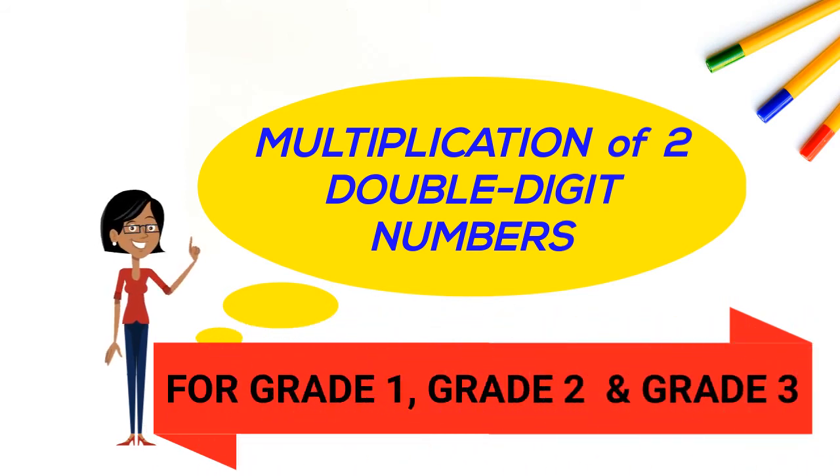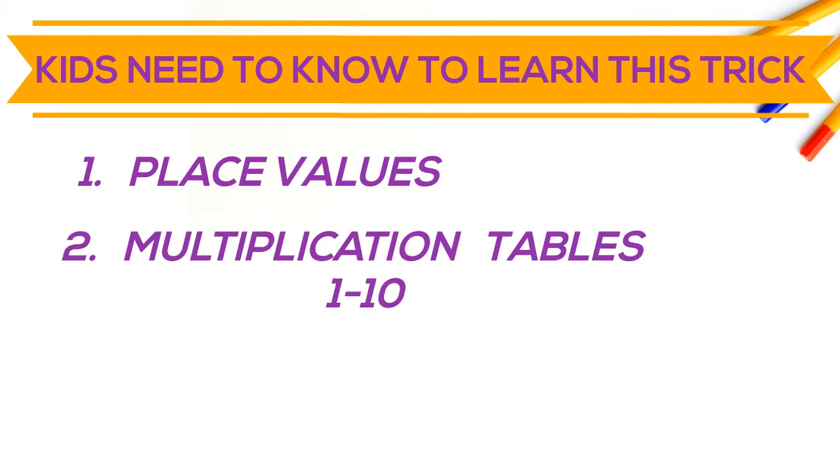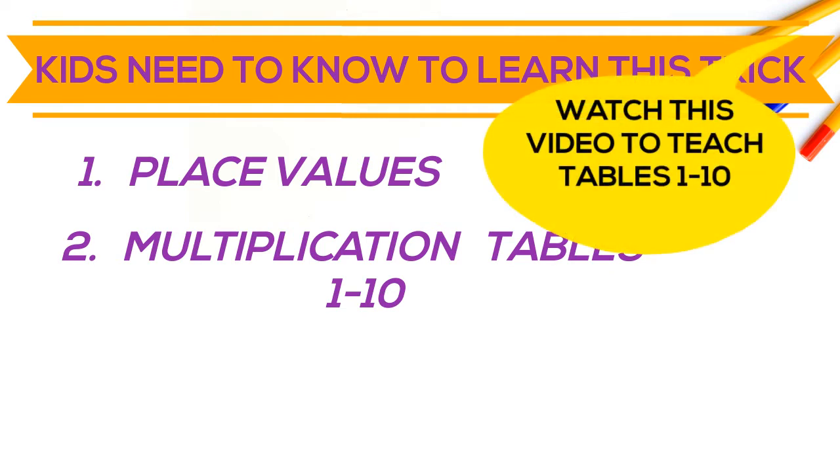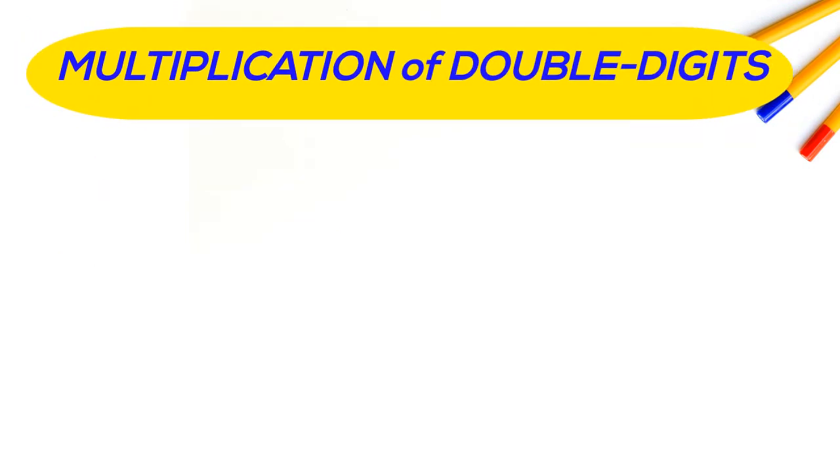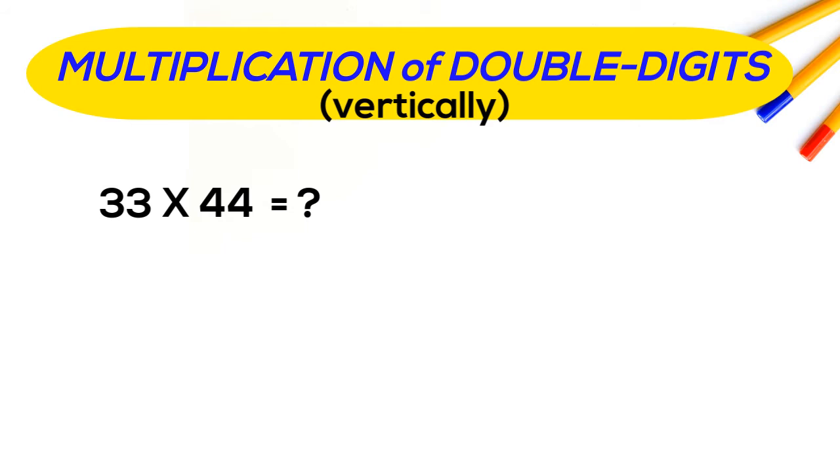For that, kids need to know the place value of numbers and basic multiplication tables of 1 to 10. You can try my this video to teach your kids table 1 to 10. So first let's multiply 33 with 44. We can do this process both vertically and horizontally. We'll try to multiply vertically this time.